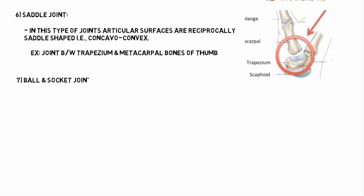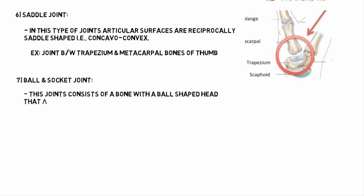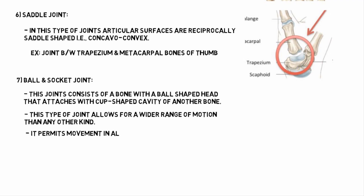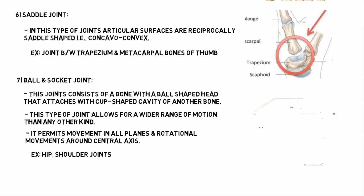The final one is the ball and socket joint. This joint consists of a bone with a ball-shaped head that attaches with the cup-shaped cavity of another bone. This type of joint allows for a wider range of motion than any other kind, permitting movements in all planes and rotational movements around an axis. Examples are the hip and shoulder joints.